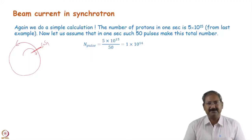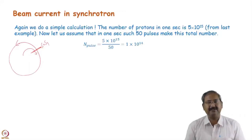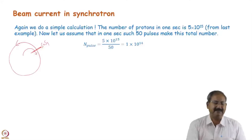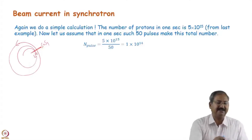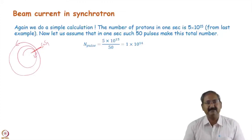In the case of a straight path, one proton will be counted only once for calculating the current. But here, one proton may be counted many times in one second, so the average current will be higher.